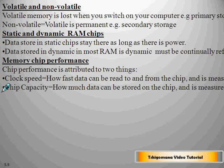Data stored in static RAM chips stays there as long as there is power, but is removed immediately when power is lost. Data stored in dynamic RAM must be continually refreshed.